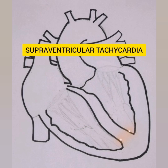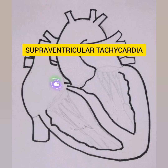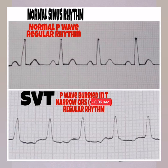Supraventricular tachycardia (SVT) is a rapid narrow complex tachycardia with a rate greater than 150. It is caused by a small re-entrant pathway that directly involves the AV node. P waves may be buried in the QRS complex, visible after the QRS complex, or very rarely visible before the QRS complex. The QRS complex is usually narrow and the rhythm is regular.